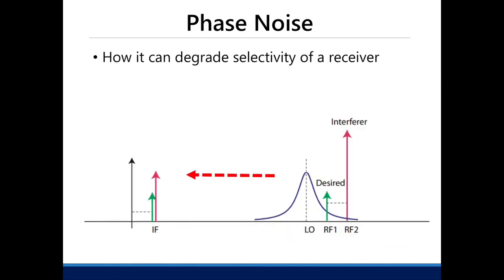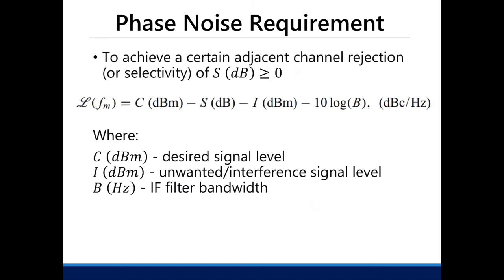This spreading can degrade the selectivity of a receiver. For example, when you down-convert a desired signal, an interferer will become closer to your desired signal due to spreading. The phase noise requirement depends on the desired signal, the selectivity you want, the power of the interferer, and the bandwidth.